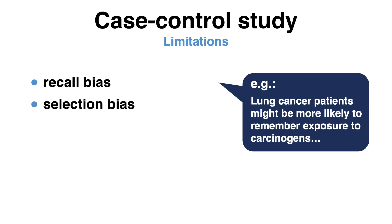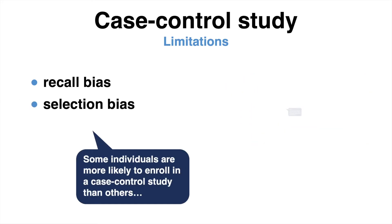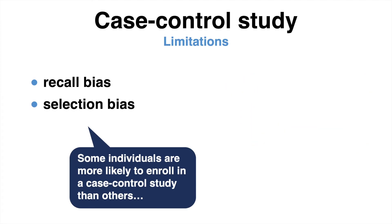A second shortcoming of case control studies is selection bias, which occurs when some individuals are more likely to enroll in a case control study than others. In our example, this could happen if previous smokers who now have lung cancer were more or less likely to participate than lung cancer patients who never smoked. Therefore, it requires more studies and ideally a meta-analysis to also prove the results of a case control study.